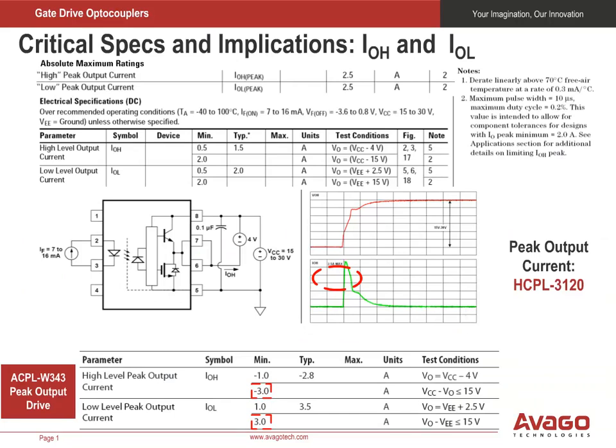Here we show an example of IGBT gate charging current and voltage waveforms captured using an Avago HCPL-3120 to illustrate its peak drive current specification of 2.5 amps peak. The HCPL-3120 will not supply the necessary 3.17 amps of peak drive current shown by our calculation. However, with an Avago ACPL-W343, we can meet our drive requirement. The ACPL-W343 specifies a minimum current of 3 amps, which is very close to 3.17 amps, and its maximum current handling capability is 4 amps.